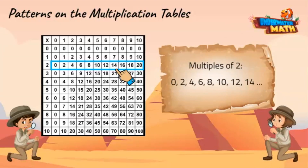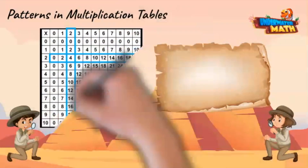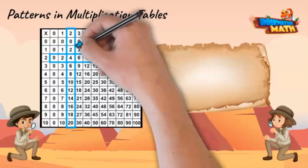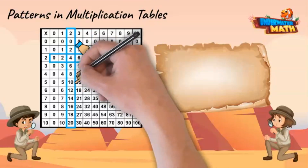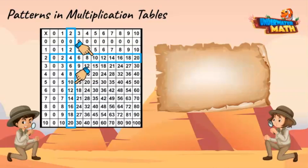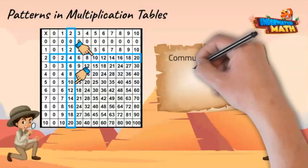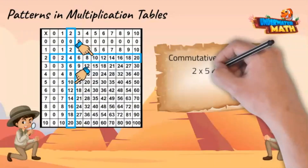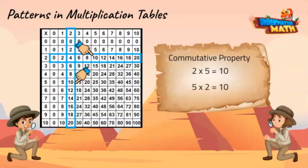That's right. Let's find another pattern. Look at the row and column highlighted in blue next to the two and beneath the two. When you change the order of the factors, you still get the same product. That's the commutative property. Two times five is ten. Five times two is ten. That's right.